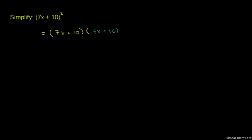Using the distributive property, multiply (7x + 10) by (7x + 10). First, distribute 7x across (7x + 10).